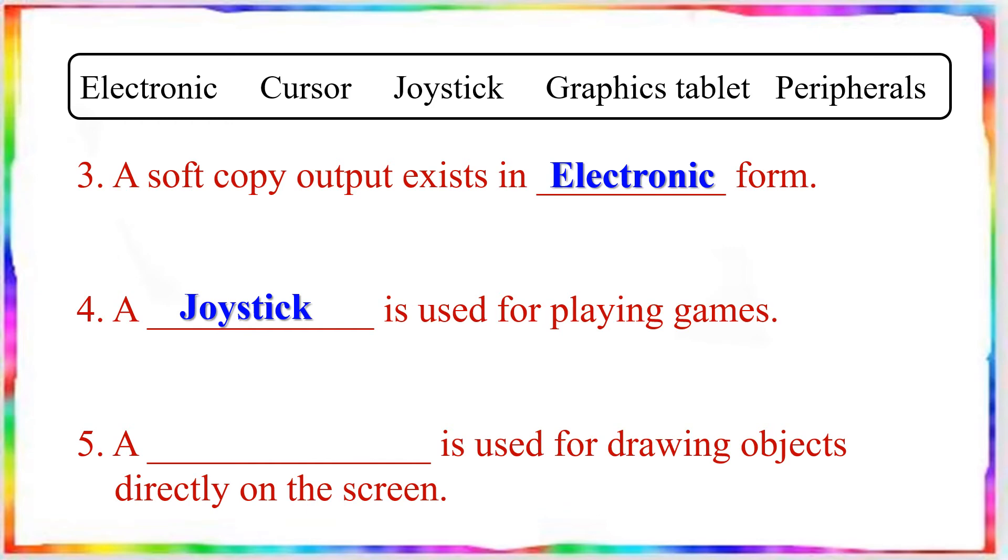Question number 5: A dash is used for drawing objects directly on the screen. Answer: graphics tablet. Using graphics tablet, you can draw objects directly on the screen.